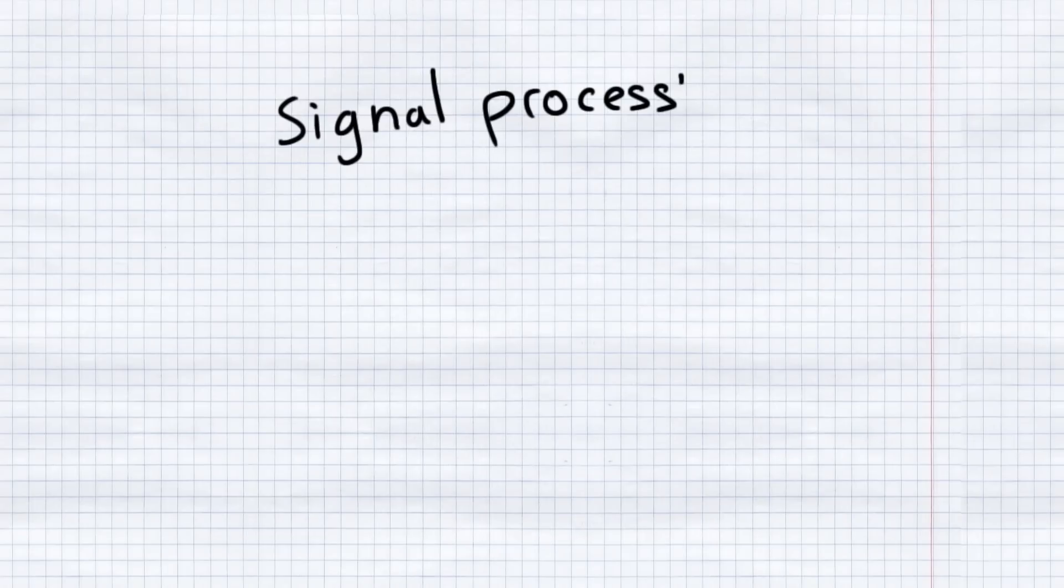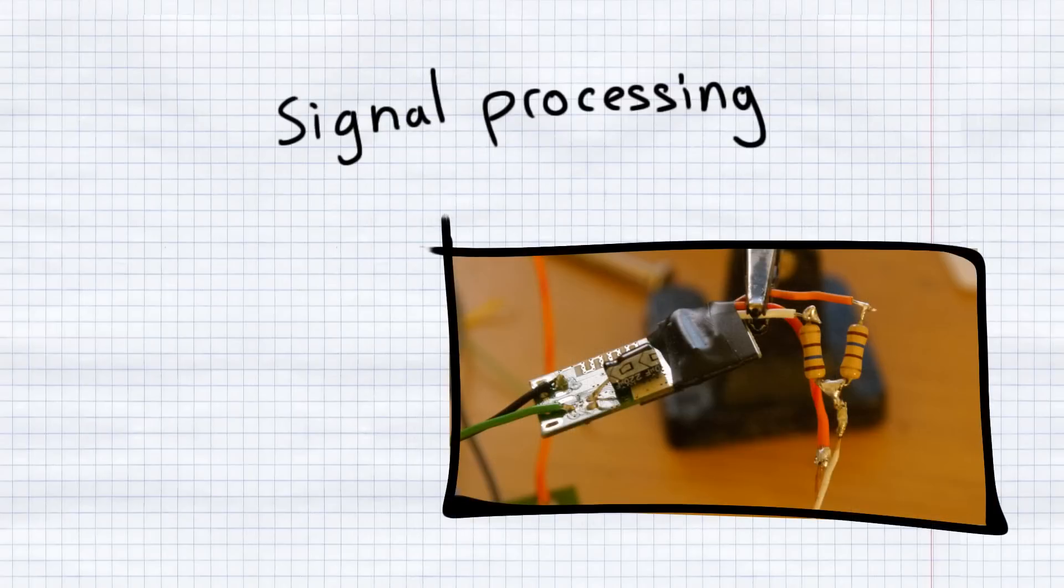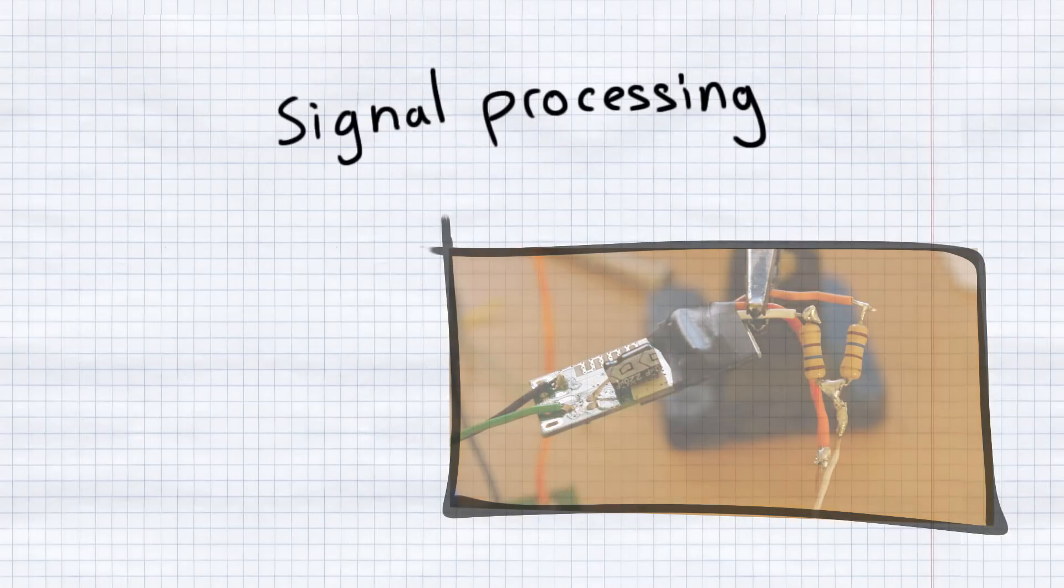There is some signal processing going on to get even more out of the system. First, the Bluetooth module's stereo signal is mixed down to mono using two 160-ohm resistors. This is because stereo won't really be noticeable on a unit of this size, and having just a mono signal allows for a neat double amplification trick for the bass driver.